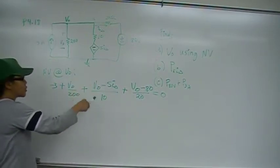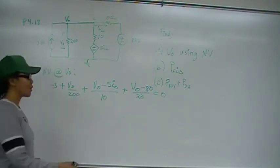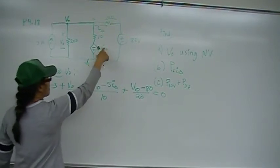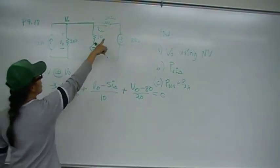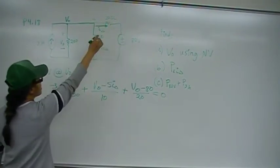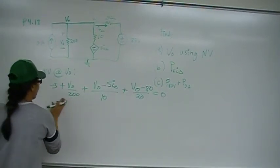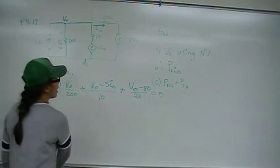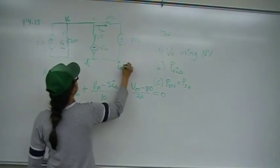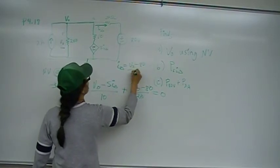Whenever you have a dependent voltage source, you always have to name what it's dependent on. It writes its own equation. In other words, we have I delta, right? We have, we don't know what I delta is. Well, I delta is here, defined right here, to the positive end, going into that, across the current, across the 20 ohm resistor. So the second equation that we need is, I'm going to park it over here temporarily, I delta is equal to V out minus 80 over 20.